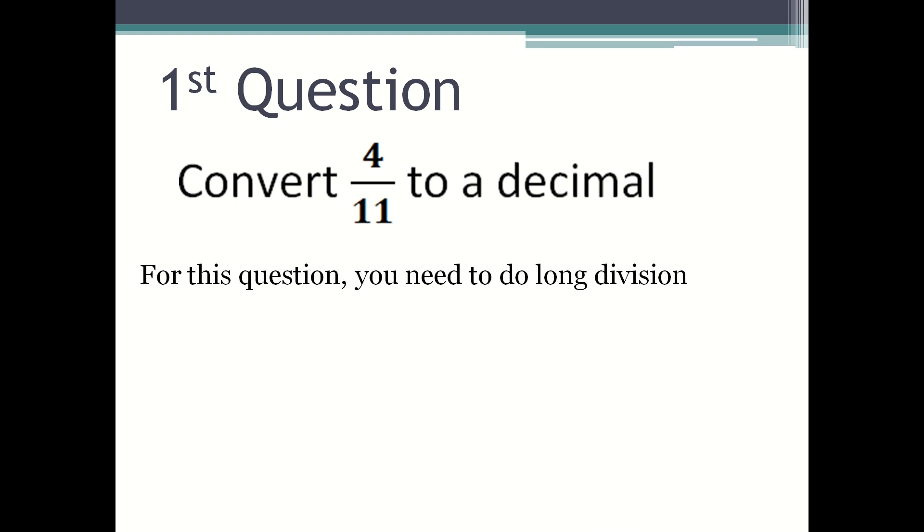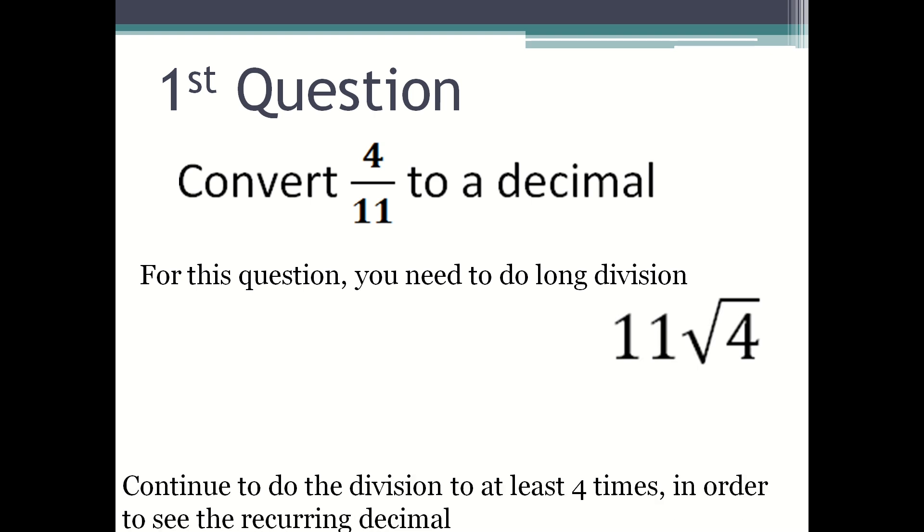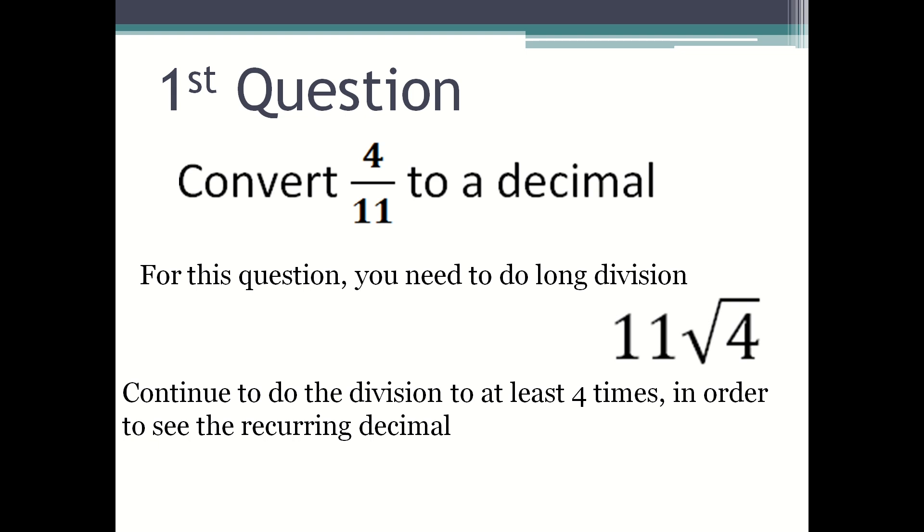The first type of question you could get is convert 4 over 11 to a decimal. For this question you need to do long division which would be 11 divided by 4, and you continue to do the division at least four times in order to see the recurring decimal.